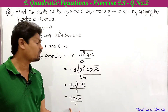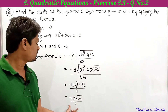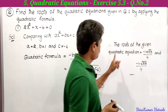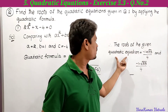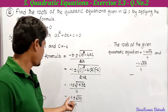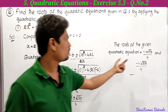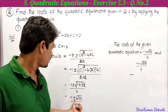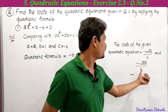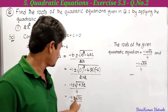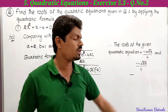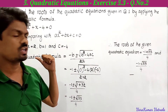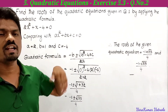Taking plus and minus separately, the roots of the given quadratic equation are (−1 + √33) / 4 and (−1 − √33) / 4. This completes the first part.